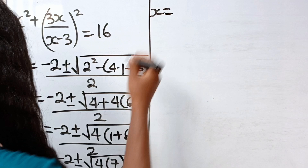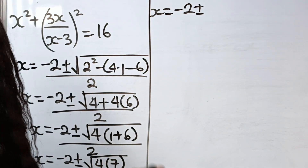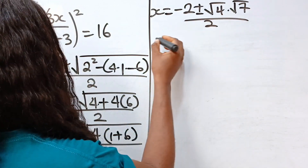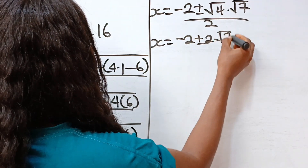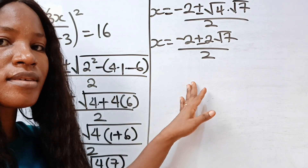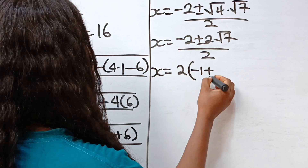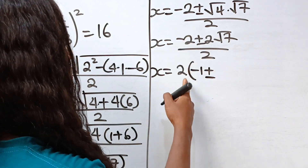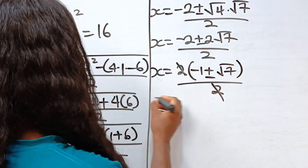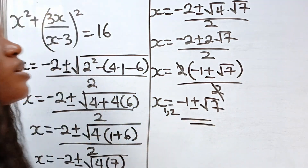We expand: square root of 4 times 7 becomes square root of 4 times square root of 7, which is 2 root 7. So x equals minus 2 plus or minus 2 root 7, divided by 2. Factoring out 2 from numerator and denominator, we get x equals minus 1 plus or minus root 7. These are the first and second values of x.